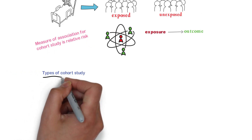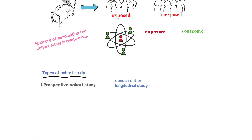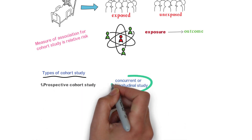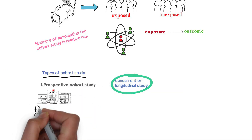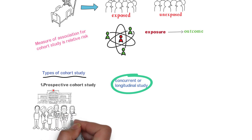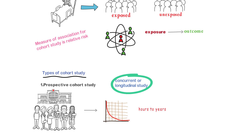Types of cohort study: prospective cohort study is also known as concurrent or longitudinal study, in which the investigator assembles the study groups or cohorts in the present time, collects baseline data on the basis of exposure, and then continues to collect data for a period of time that can last from hours to years.